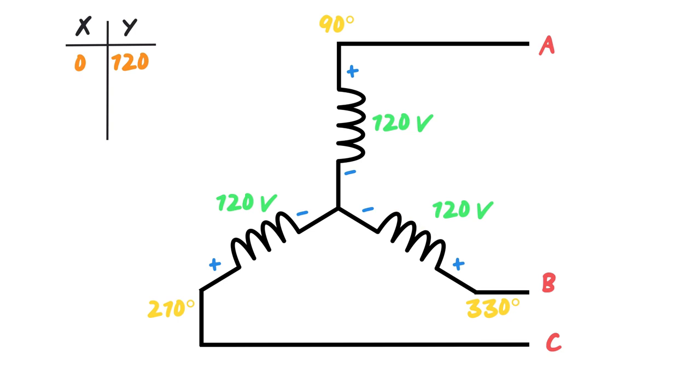Then I'm going to take the sine of 330 degrees and multiply it by negative 120. The cosine will give me the X, the sine will give me the Y. Plug that into your calculators.